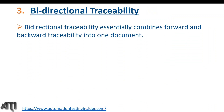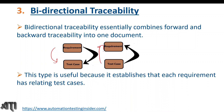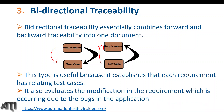Bi-directional traceability matrix essentially combines forward and backward traceability into one document. It is done both before and after execution — from requirements to test cases and from test cases back to requirements. This type is useful because it establishes that each requirement has related test cases, and it also evaluates modifications to requirements occurring due to bugs in the application — for example, if a requirement is missing or incorrect, this helps identify and track those changes.